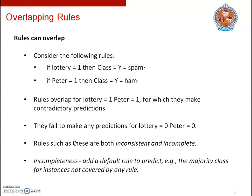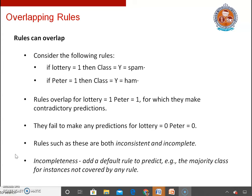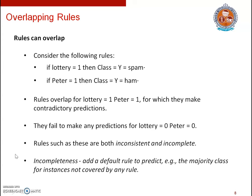Sometimes rules may overlap. For example, if lottery equals 1 then class is spam; if 'pater' equals 1 then class is ham. Suppose an email contains both the words 'lottery' and 'pater', then it is ambiguous — we cannot decide whether the email belongs to class spam or ham. In such cases, we create a default rule which assigns the email to the majority class in the dataset.